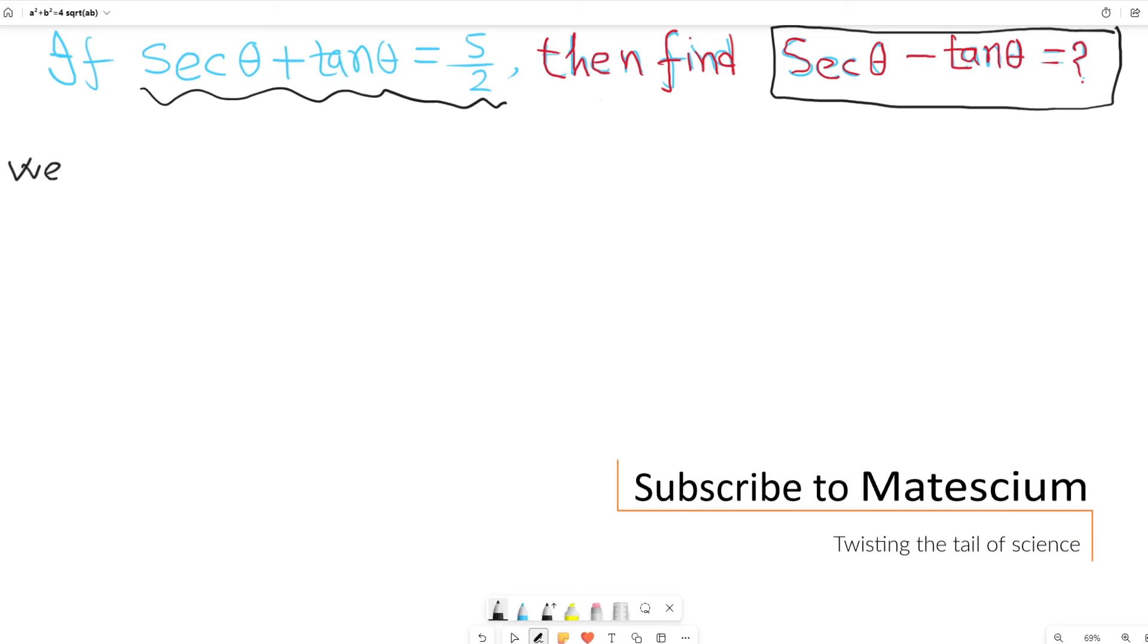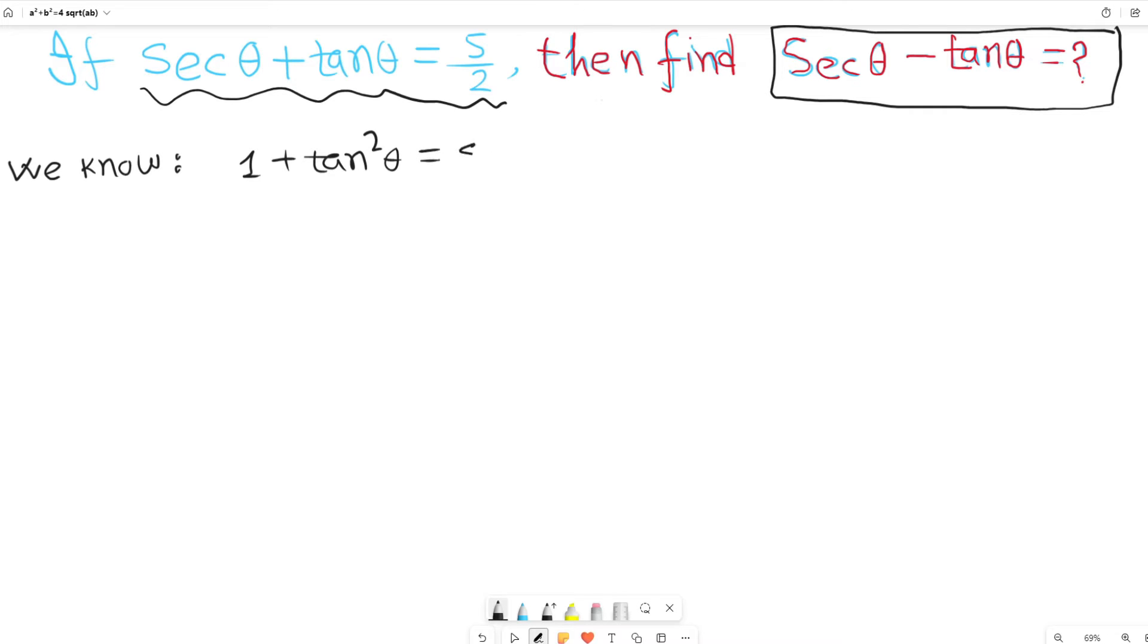To solve this, we have to start with a common trigonometry formula. We know that 1 plus tan squared theta equals sec squared theta. This is a common math trigonometry formula. From this we can rewrite this mathematical statement as sec squared theta minus tan squared theta equals 1.